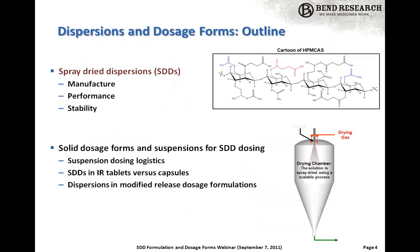To the main part of the talk: we're going to discuss spray-dried dispersions and their dosage both in suspensions and solid dosage forms. The outline covers three key attributes — manufacturability, performance, and stability — with the goal of choosing a formulation and process that has acceptable attributes in all three areas. We'll then discuss dosing in suspensions as a dry powder, and solid dosage forms for both immediate release and modified or controlled release. We also discuss the polymer HPMCAS, one of the excipients we often use for SDD formulations.